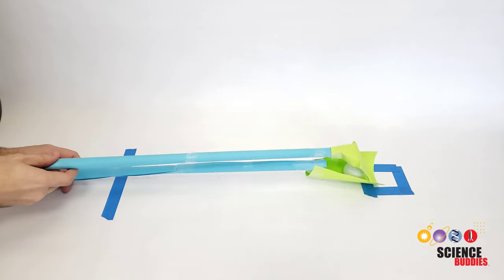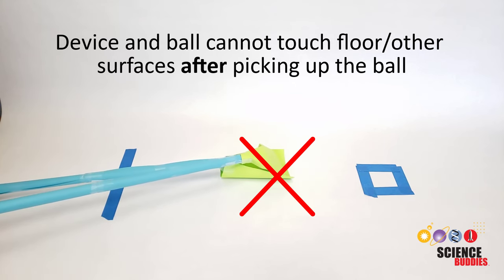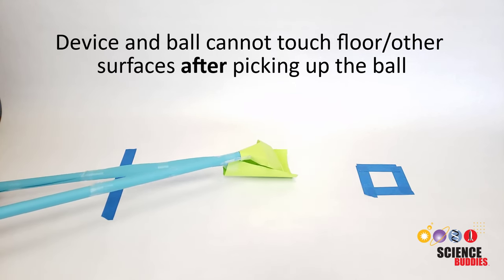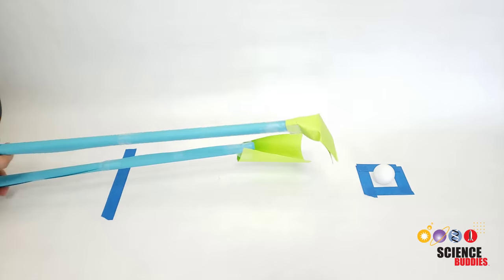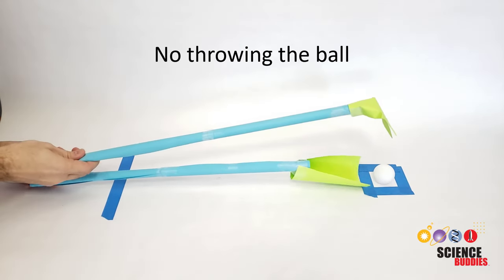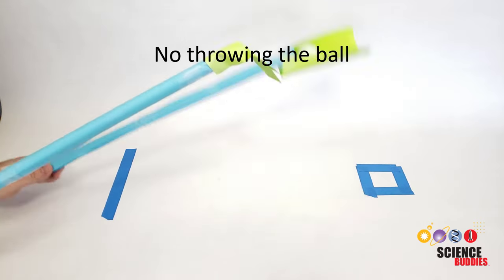After you have picked up the ball, no part of the device or the ball can touch the ground or any other surface in front of the start line. If they do, you have to start over. Once you've picked up the ball, it must remain in contact with your device and cannot become airborne while it is still in front of the start line. No throwing the ball.